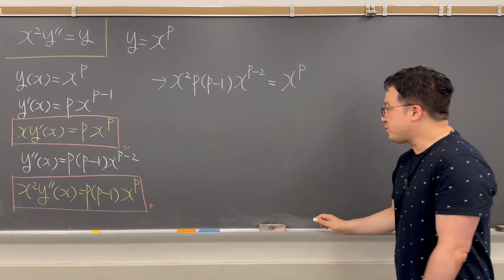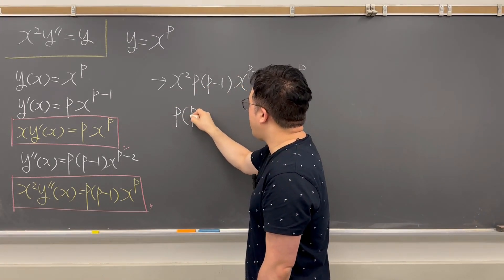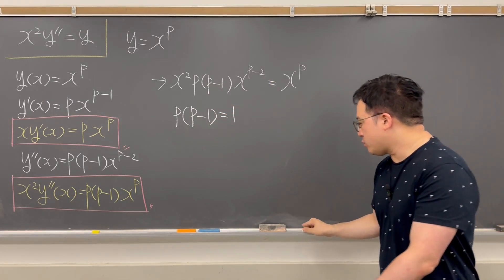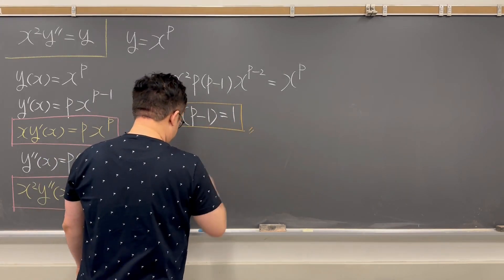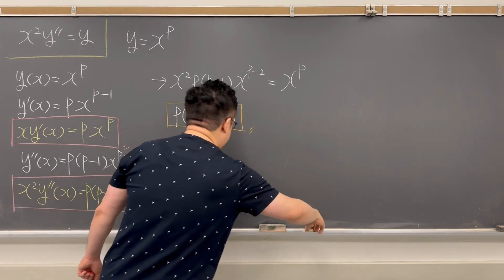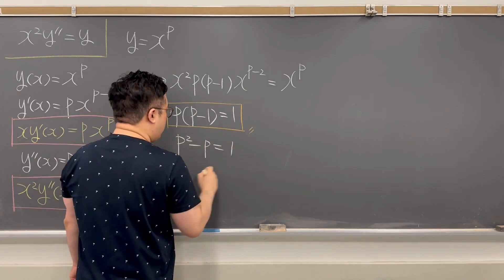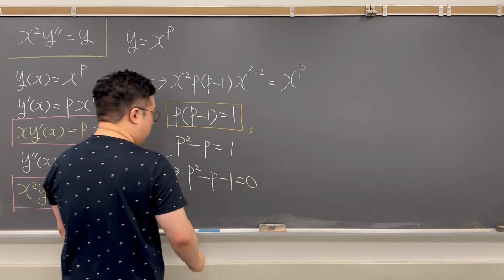So that's why from this case, we can easily say your p times p minus 1. This needs to be equal to 1. So that's why we can solve this quadratic equation for the p. So it should be then p squared minus p is equal to 1, which is the same as p squared minus p minus 1 is equal to 0.